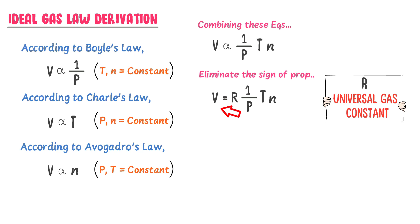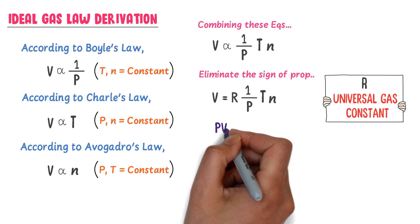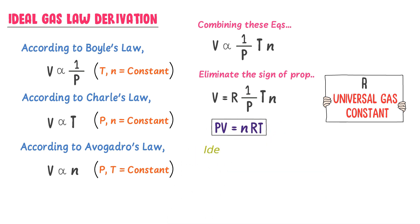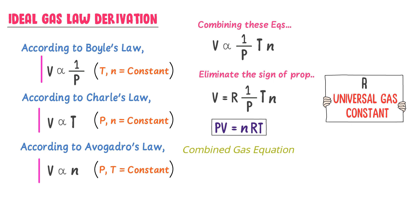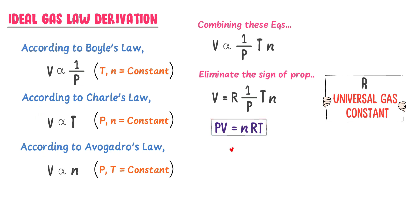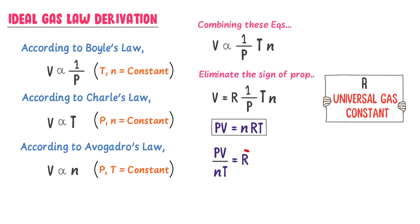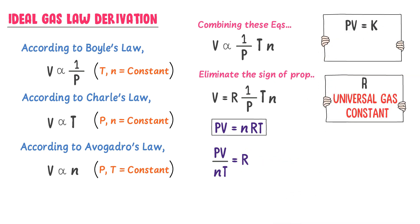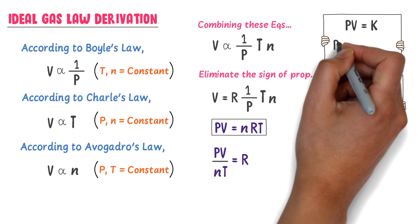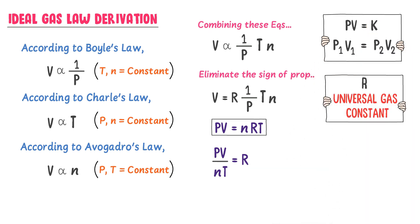Shifting P from the right-hand side, we get PV/NT = R. We know from Boyle's law that PV = K, where K is constant, so we write P₁V₁ = P₂V₂.